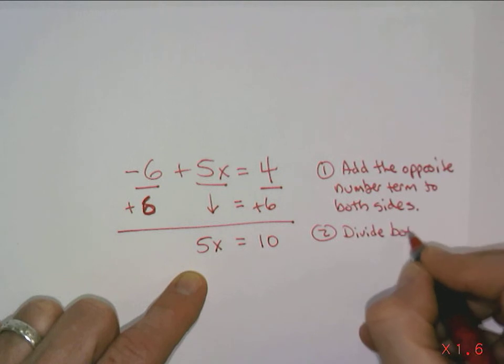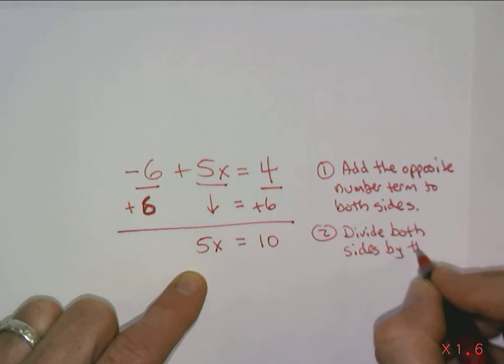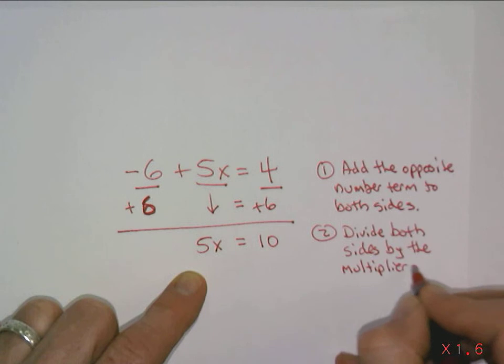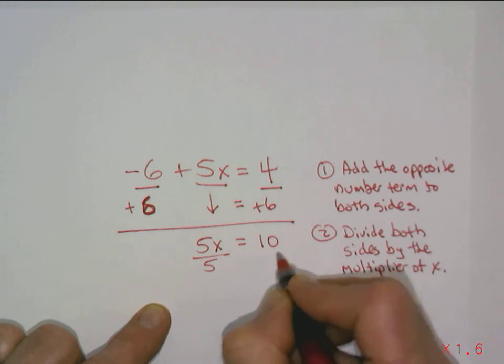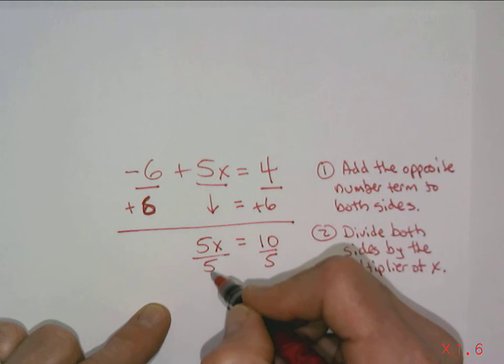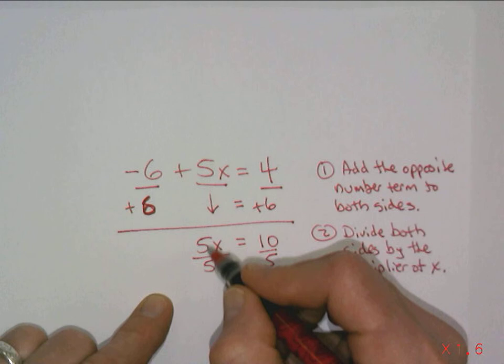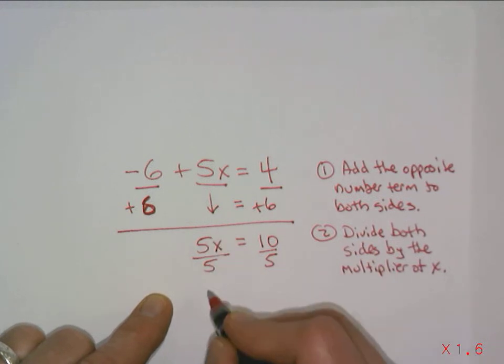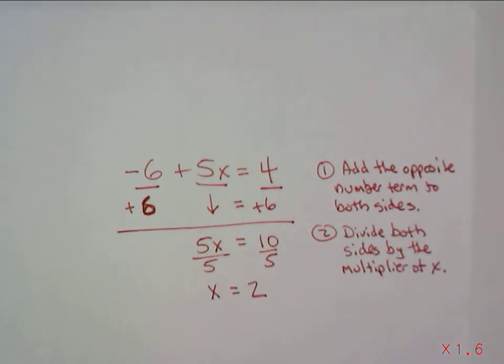Divide both sides by the multiplier of x. So if we're dividing both sides by the multiplier of x, we're dividing both sides by 5. And so 5 divided by 5 is 1. Some people would say the 5s cancel. They really in a sense don't cancel, they just equal 1. So when you take that number divided by itself. So we have 1x which is just x. And 10 divided by 5 is 2, which gives us the solution for x.